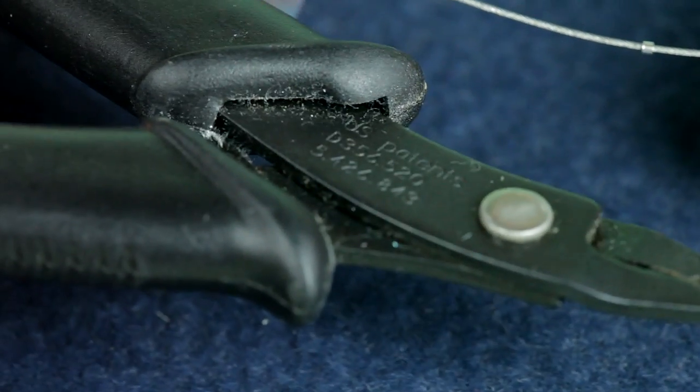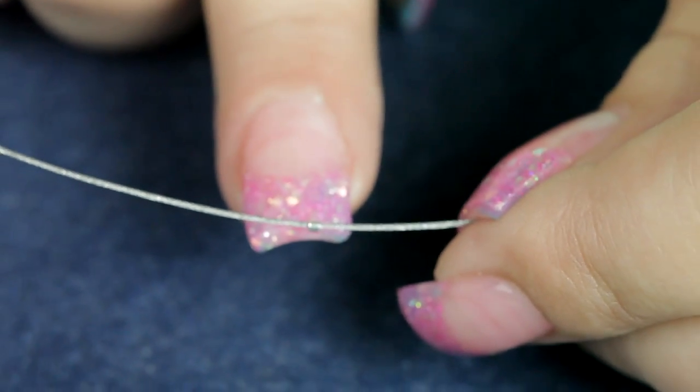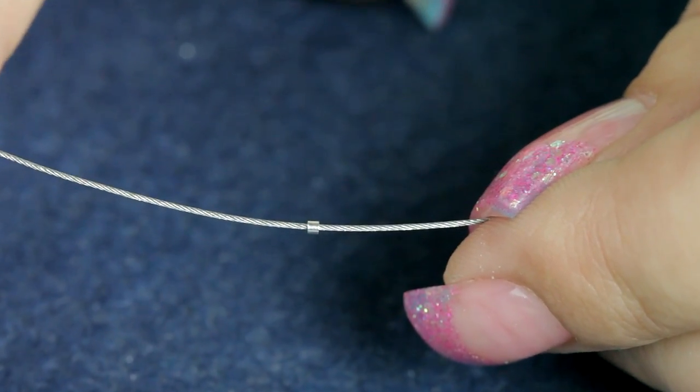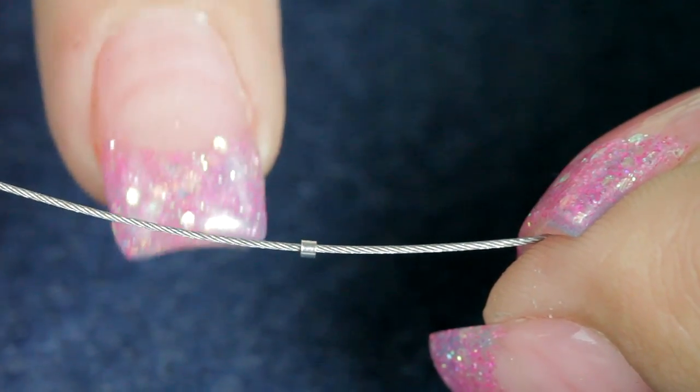I'm going to demonstrate how to use the micro crimper. This is used for the one-by-one crimp tubes, which is probably better used in an illusion type necklace where you want to stop beads by crimping them in place.